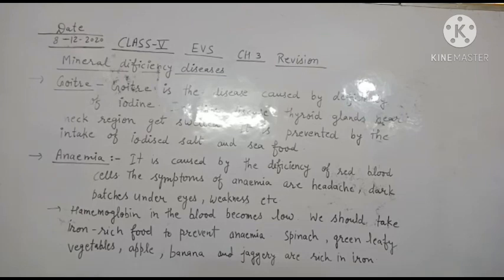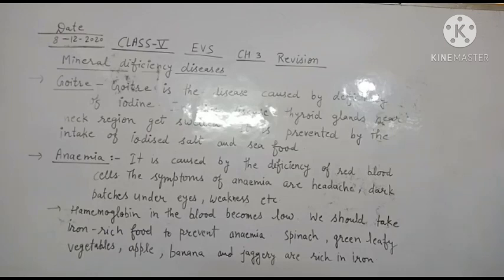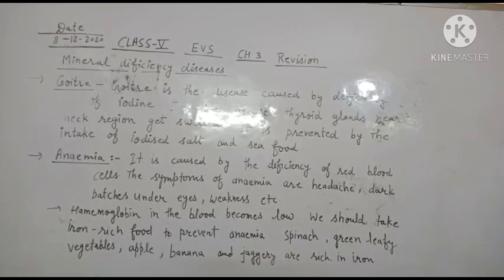The next disease is anemia. Anemia is a disease caused by the deficiency of iron. Iron is a mineral, and its deficiency leads to anemia, which is caused by a reduction in red blood cells.